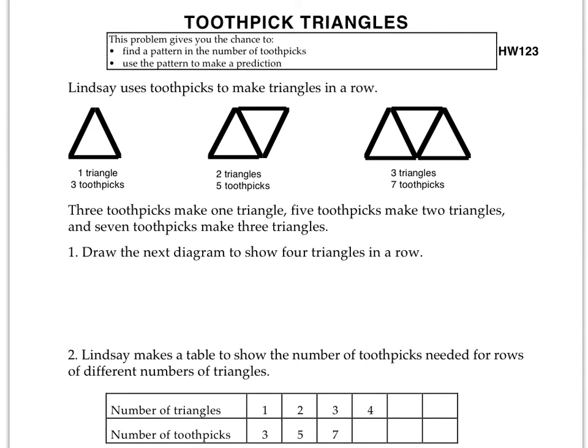We're going to go ahead and move on to the back side in just a moment. Here we are on the back side called toothpick triangles. Lindsay uses toothpicks to make triangles in a row. One triangle is made up of three toothpicks. Two triangles are made up of five toothpicks. Three triangles are made up of seven toothpicks. It says three toothpicks make one triangle. Well, that just repeats everything I just said. Number one says to draw the next diagram to show four triangles in a row.